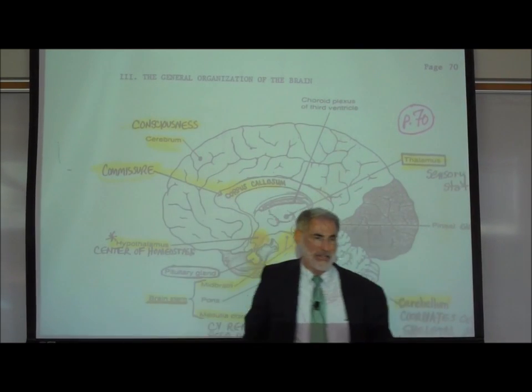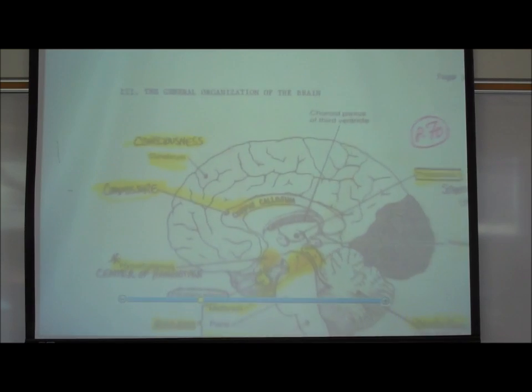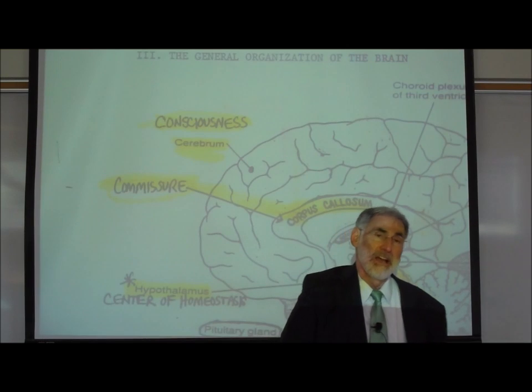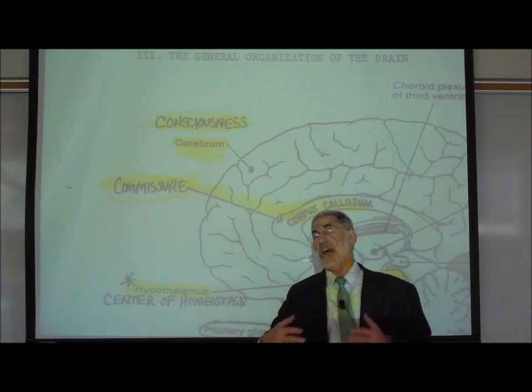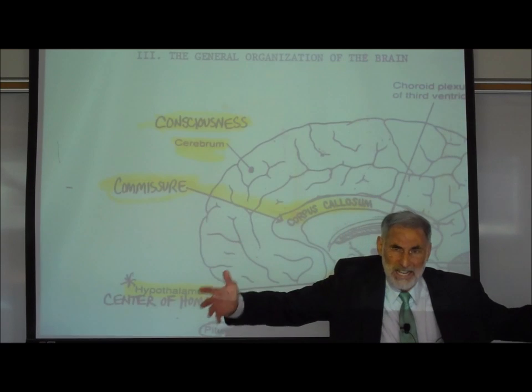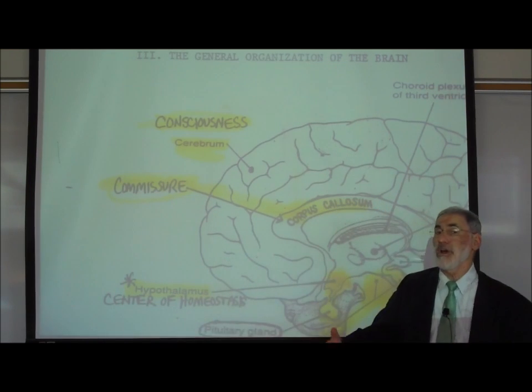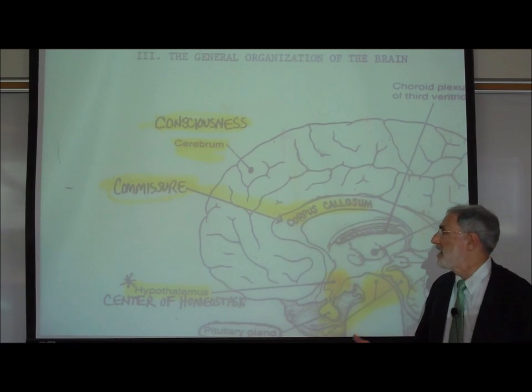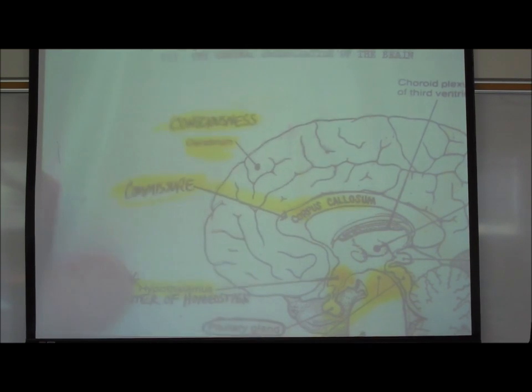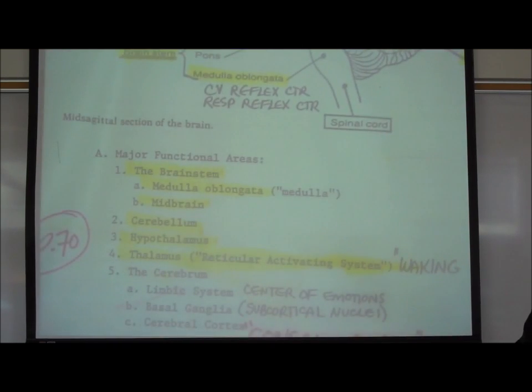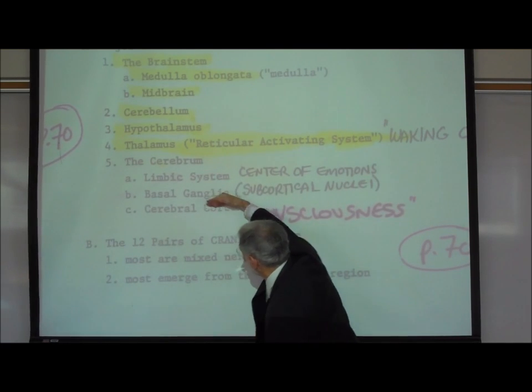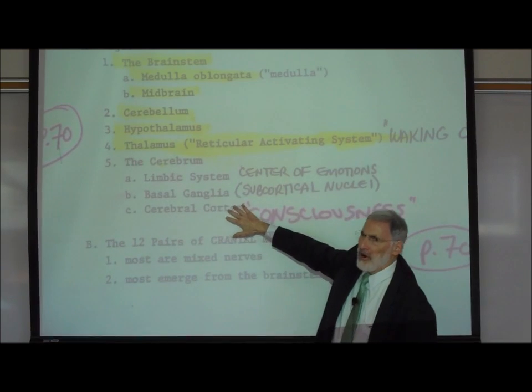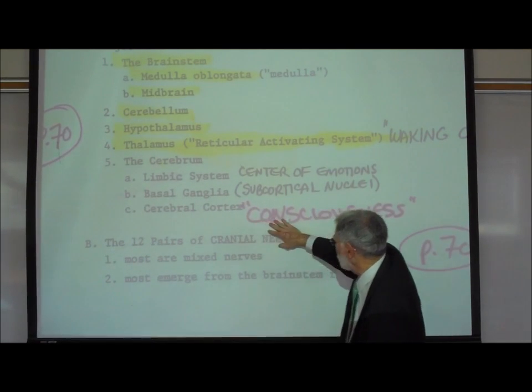The cerebrum is that part of the brain where there is consciousness or awareness of what it's doing. It is in the cerebrum where we have conscious awareness of our senses, and it is also in the cerebrum where we can initiate voluntary or volitional movement of our body. Now the cerebrum can be further subdivided. The outermost part, the highest level of the cerebrum, is the cerebral cortex.